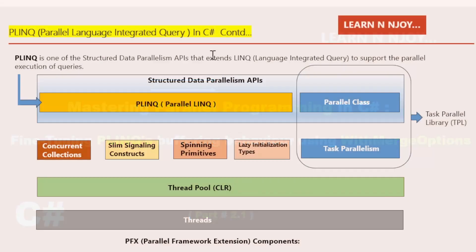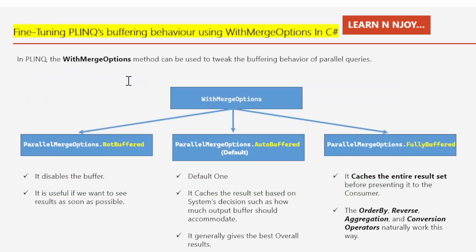In Part 2 of the Mastering Parallel Programming series, we learned what PLINQ is and how and why to use it in a C# program. If you did not watch that video, you can find the link in the upper right corner or in the description. If you watched previous videos in this series, you might recall the diagram we covered. Today we will go one step further.